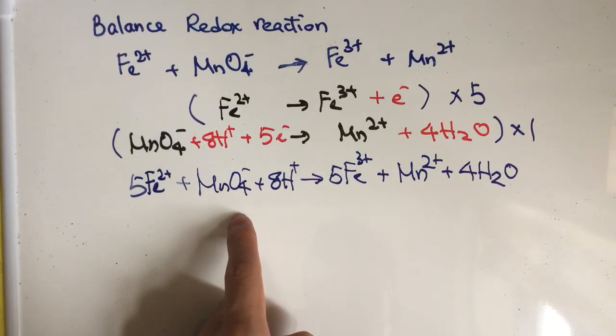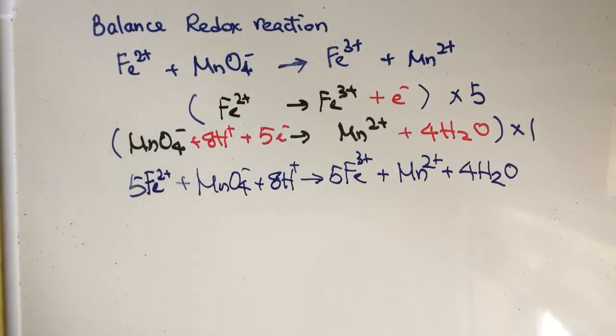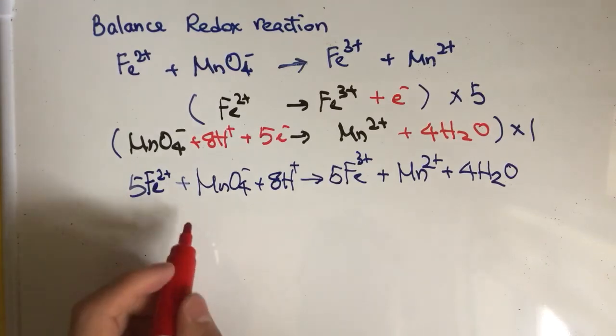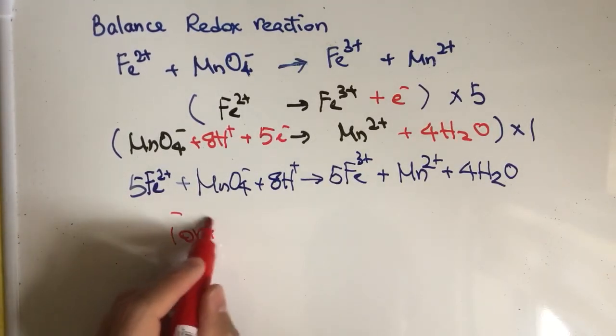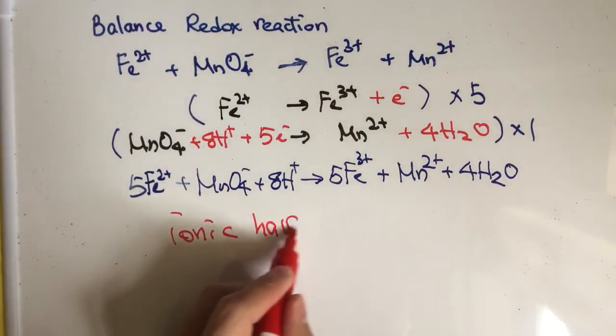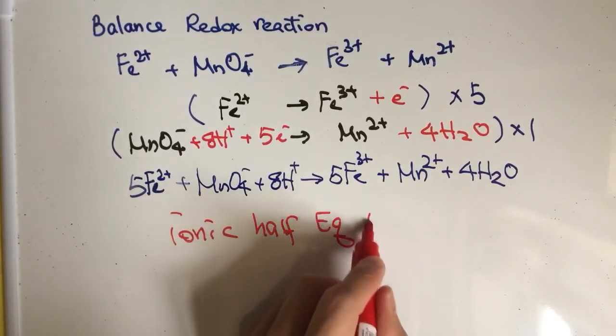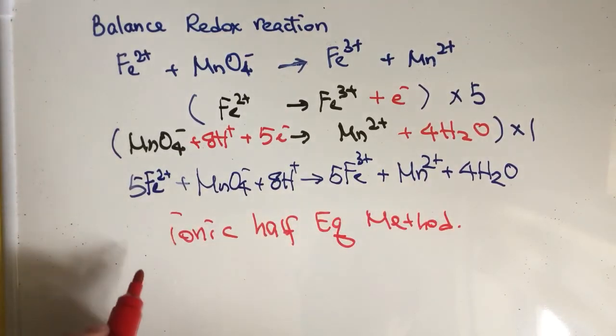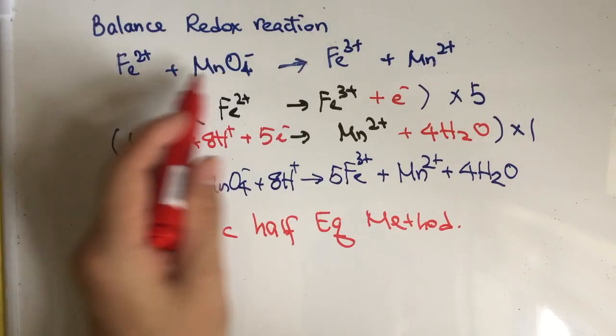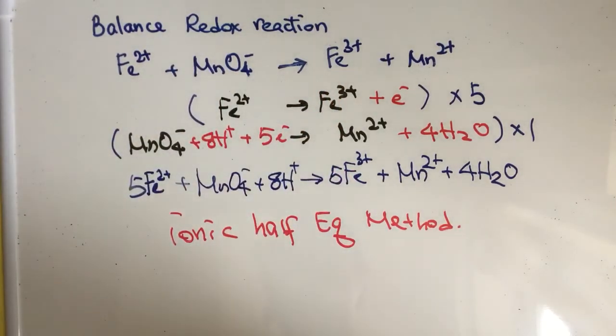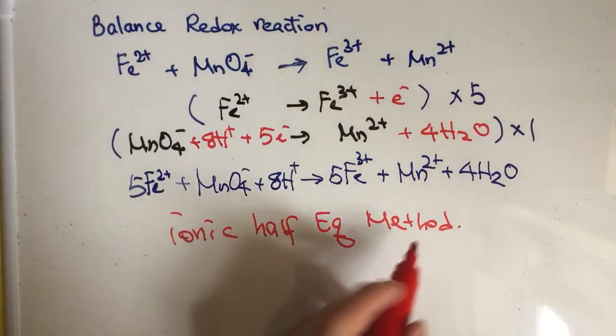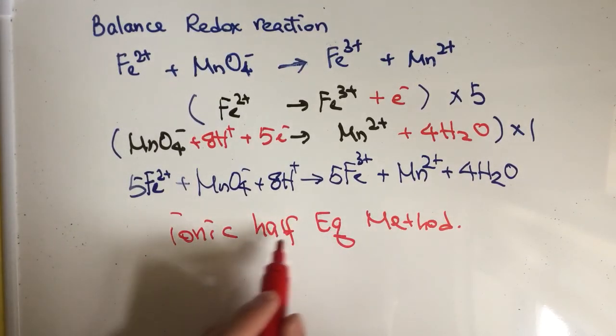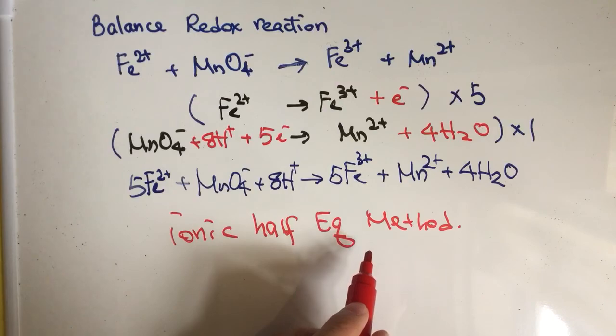And this is what we call the ionic half-equation method. We try to separate the reaction here into two different half-equations and combine them. Thank you.